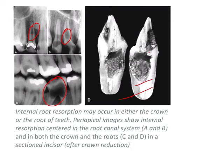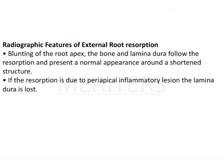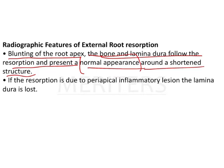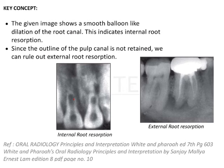To differentiate internal from external root resorption: internal root resorption is confined within the pulp space, while external root resorption shows blunting of the root apex, and bone and lamina dura will be present. If resorption is due to a periapical inflammatory lesion, the lamina dura is lost. The key concept is that the given image shows a smooth balloon-like dilation of the root canal indicating internal root resorption. In external root resorption, the pulp canal outline is preserved.